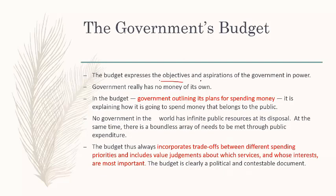The budget expresses the objectives and aspirations of the government in power. The government really has no money of its own — all resources are owned by the citizens, and the government acts like management, using this money to make plans to enhance services provided to the public and to make new projects that can help improve the economy of the country. The budget is the government's plan for spending money, explaining how it will spend money that belongs to the public. No government in the world has infinite public resources at its disposal.